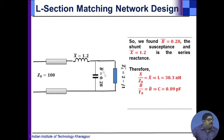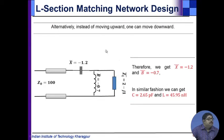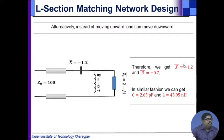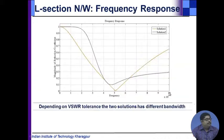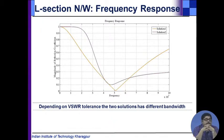Reading the Smith chart values, we find the normalized susceptance is 0.28 and the normalized reactance is 1.2. We can then unnormalize to find the actual L and C values at 500 megahertz. Plotting the frequency response shows two solutions behaving differently across frequency.